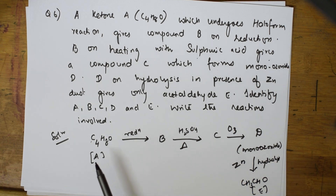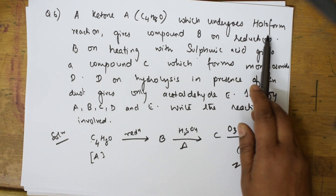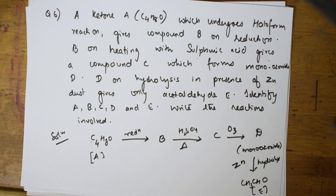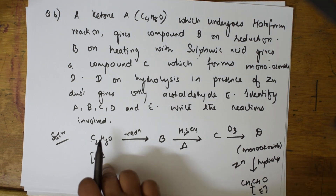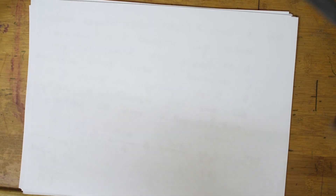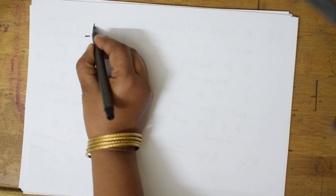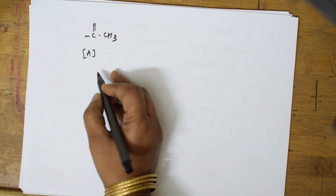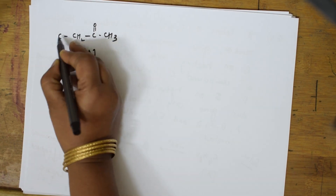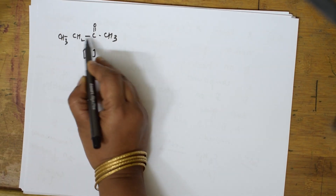Compound A undergoes haloform reaction. Only compounds with a methyl ketone group undergo the haloform reaction. So A must compulsorily contain a methyl ketone group — CH₃CO. Now with C₄H₈O and a methyl ketone group: CH₃CO already uses 2 carbons, so I have 2 more carbons — giving CH₃COCH₂CH₃. Let me verify: C₄H₈O — 1,2,3,4 carbons and 8 hydrogens — yes, that fits.